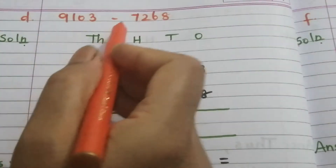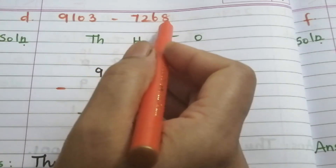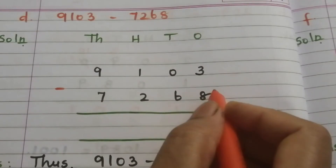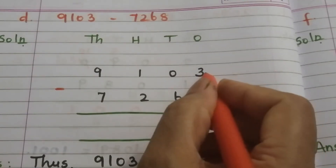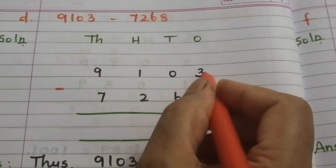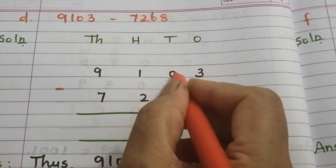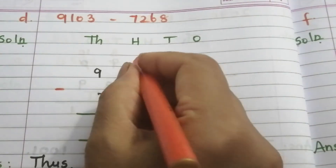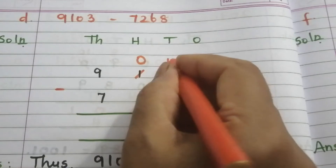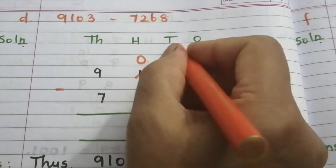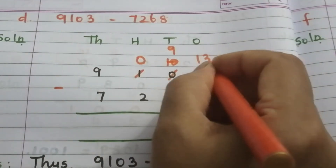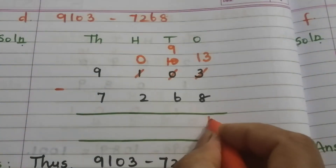Part D: 9103 minus 7268. Write these two numbers vertically, then subtract. 8 is greater than 3, so we can't subtract. We move to the next place, but here also 0 — we can't borrow from here. So we move to the next place. This 1 becomes 0 and this 0 becomes 10. Borrow from this 10 — it becomes 9 and this 3 becomes 13. 13 minus 8 is 5.